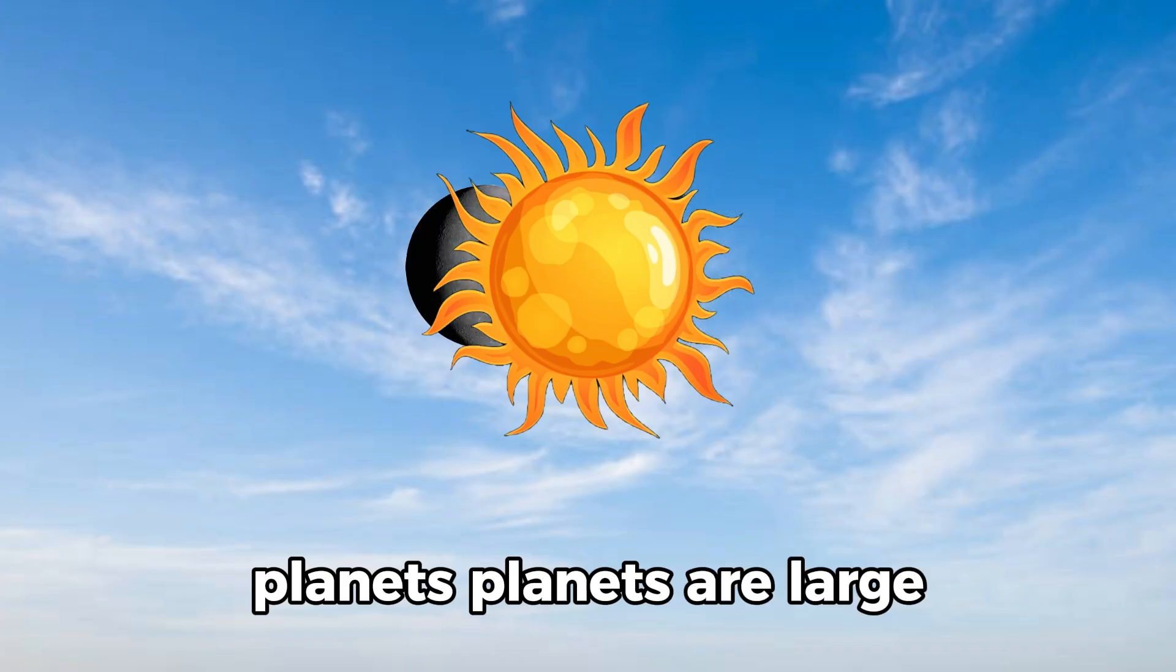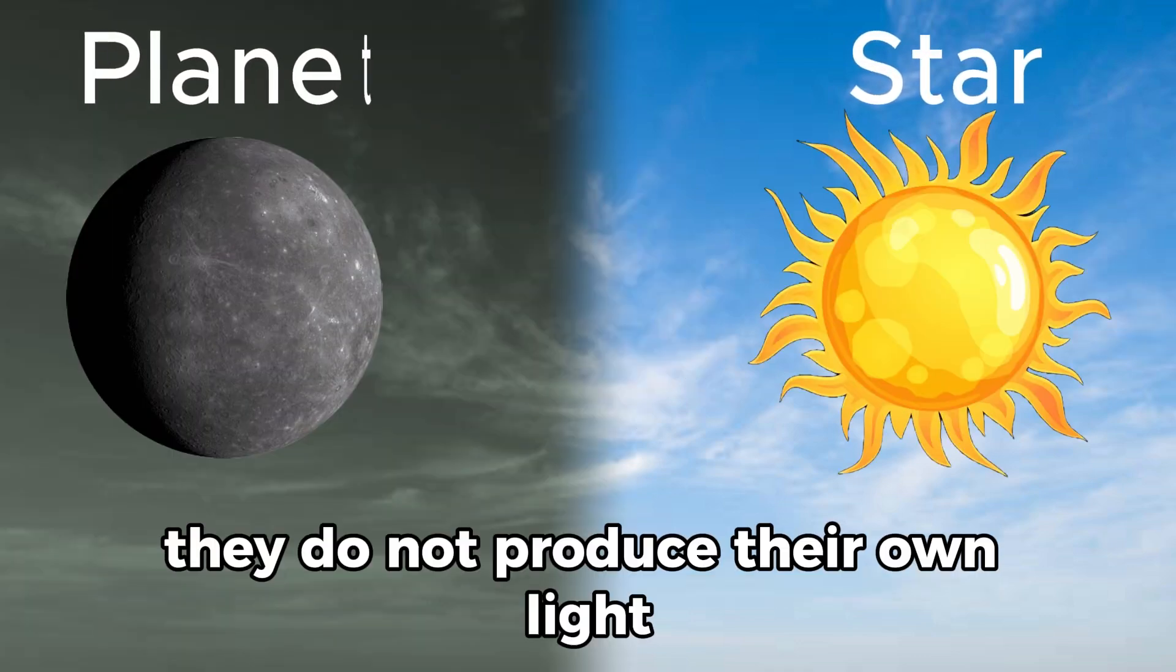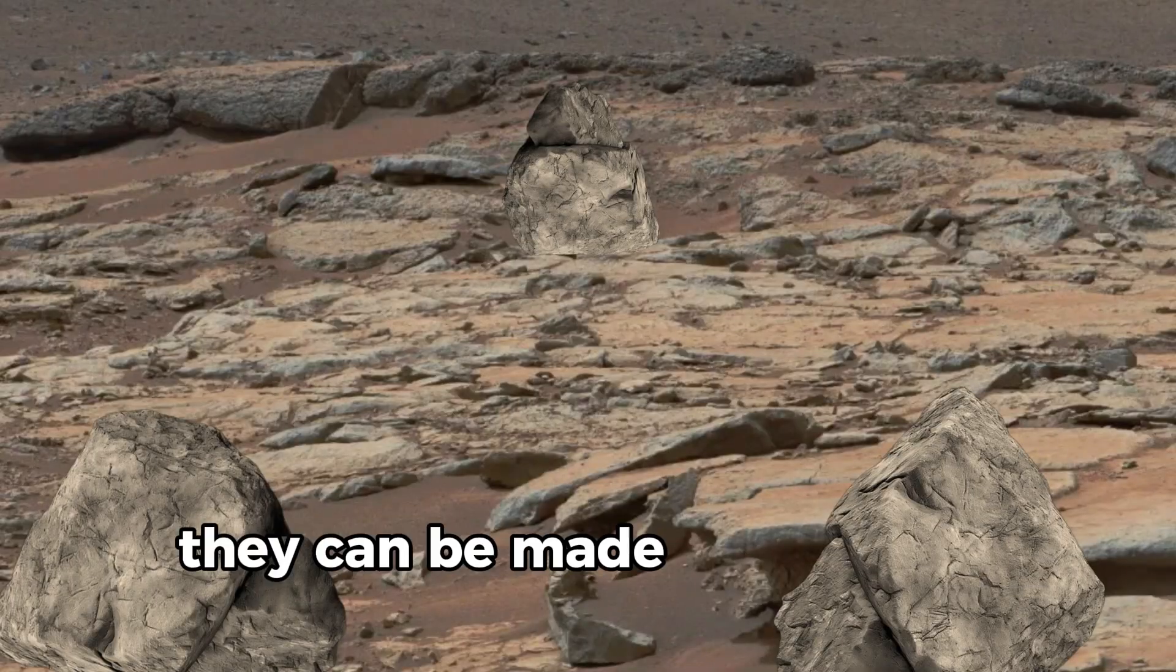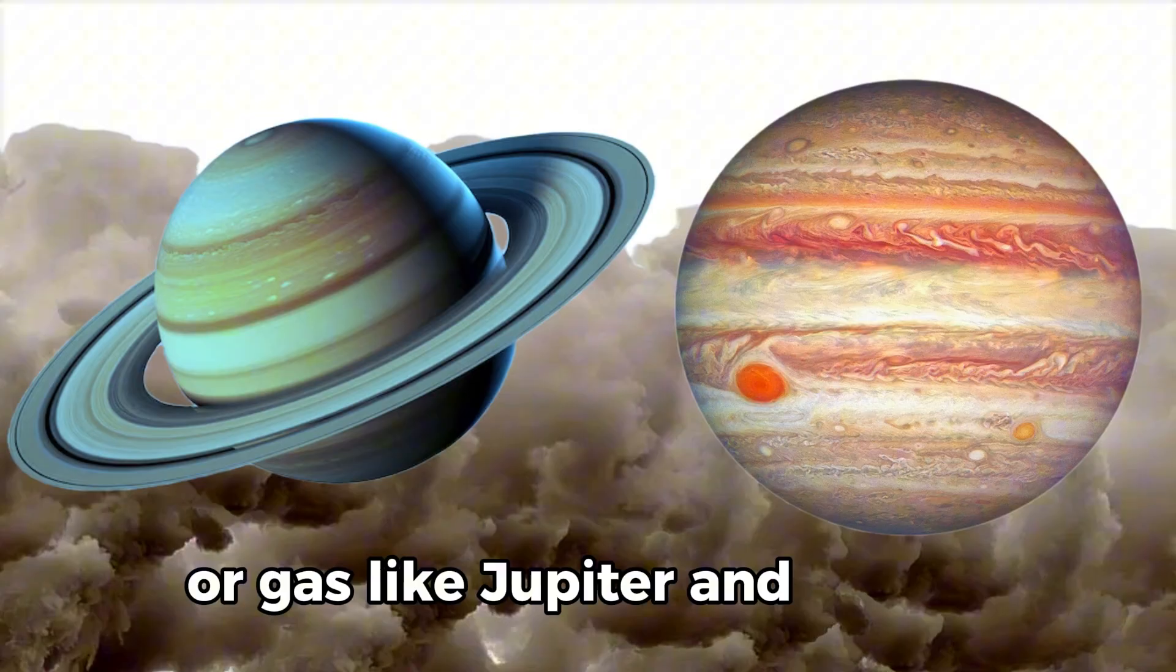Planets are large, round objects that orbit a star. They do not produce their own light; instead, they reflect the light from their star. They can be made of rock, like Earth and Mars, or gas, like Jupiter and Saturn.